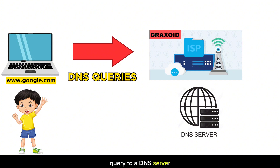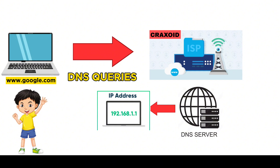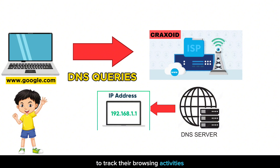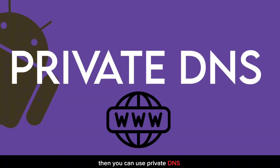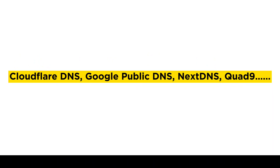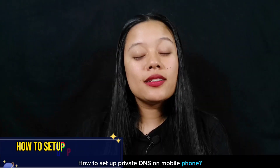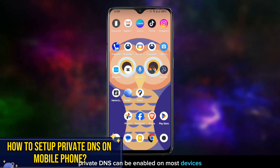When you send a DNS query to a DNS server, you are essentially telling the DNS server which website you want to visit. The DNS server then responds with the IP address of the website. If ISP CrackZoid wants, they can log the DNS queries of their customers and use that information to track their browsing activities. But if you want to protect your privacy and prevent your ISP from tracking you, you can use private DNS to encrypt your DNS queries by configuring your device to use a different DNS resolver, such as Cloudflare DNS or Google Public DNS. Once configured, your DNS queries will be encrypted and ISP CrackZoid will not be able to see what websites you are visiting.